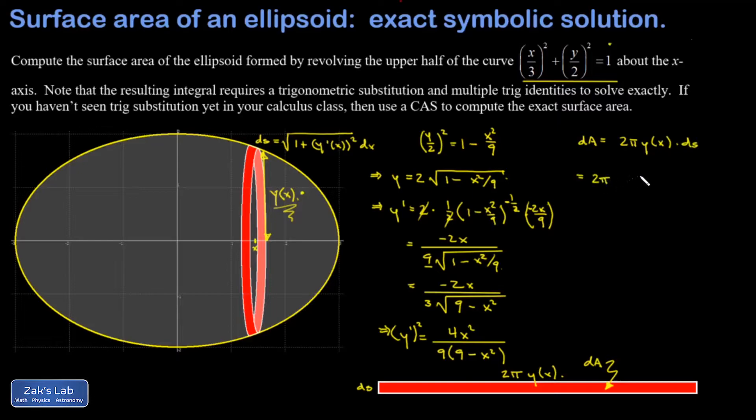That's 2 pi times 2 root 1 minus x squared over 9 times ds, which is this enormous square root 1 plus 4x squared over 9 times the quantity 9 minus x squared dx. This is why it's surprising that it turns out this thing has an exact form solution. ds in practice is usually so ugly that there's no symbolic solution to these integrals. Well, this is one case where there is.